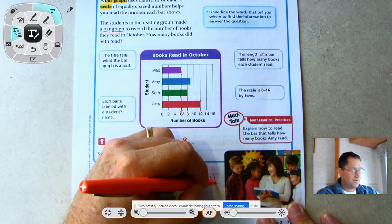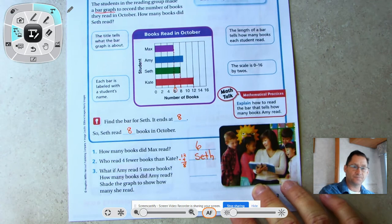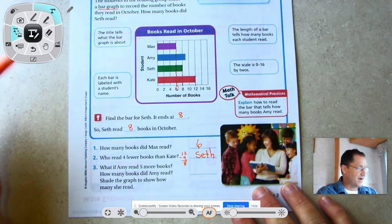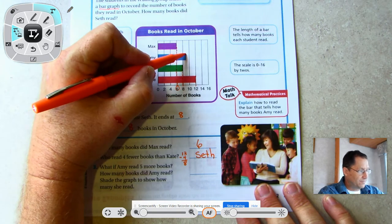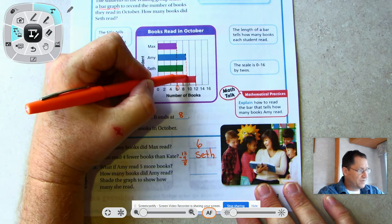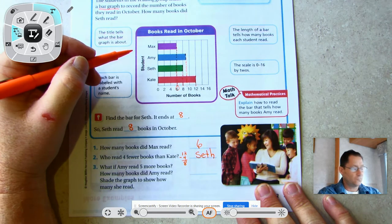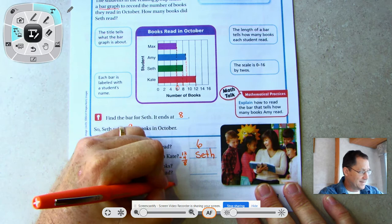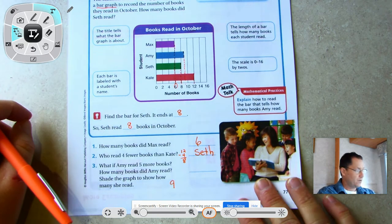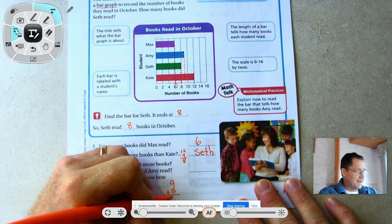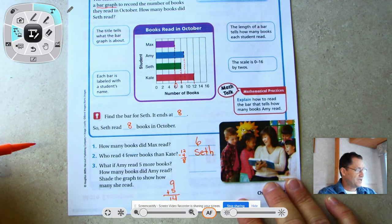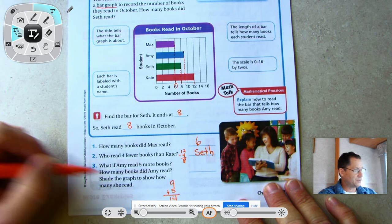Who read four fewer books than Kate? We'll find Kate and we see that she read twelve. Twelve take away four is eight, so who read eight books? We know that Seth read eight books. What if Amy read five more books?